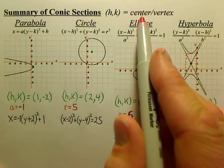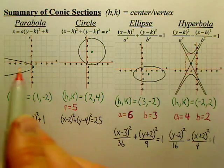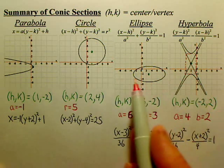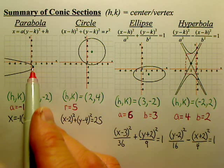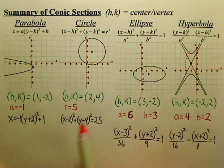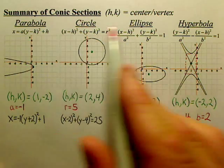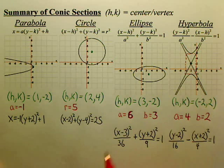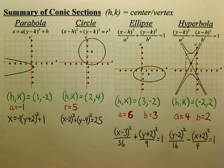First of all, you have this h,k. h,k is the center or the vertex. For instance, here's the center, it's the green dots. This one is the vertex, so there's no center of a parabola. Let's talk about each one of these shapes. That's parabola, circle, ellipse, and hyperbola. The four conic sections, all one happy family.